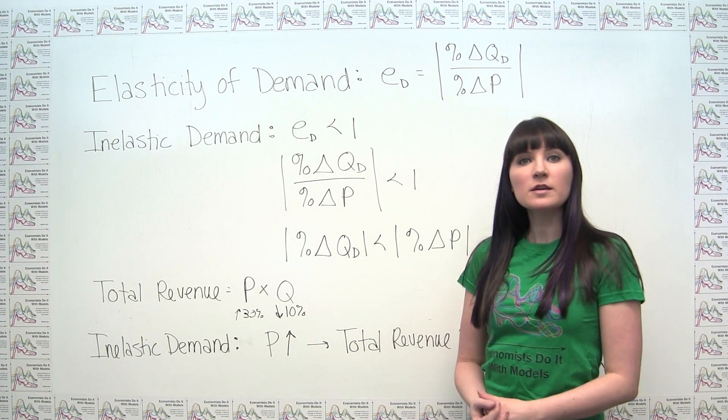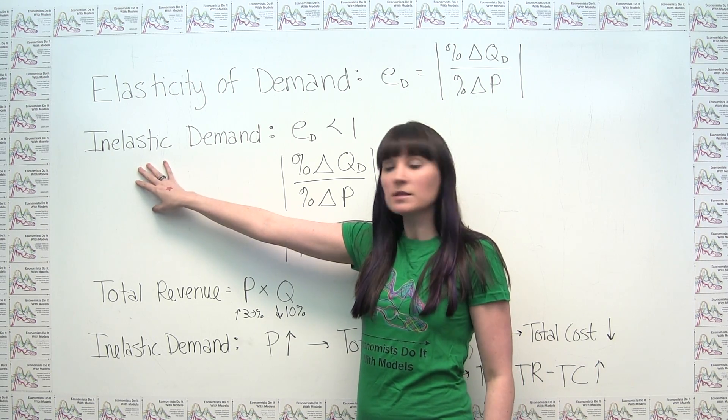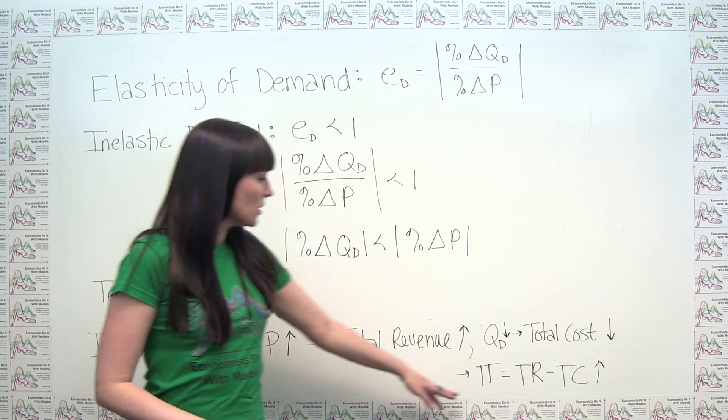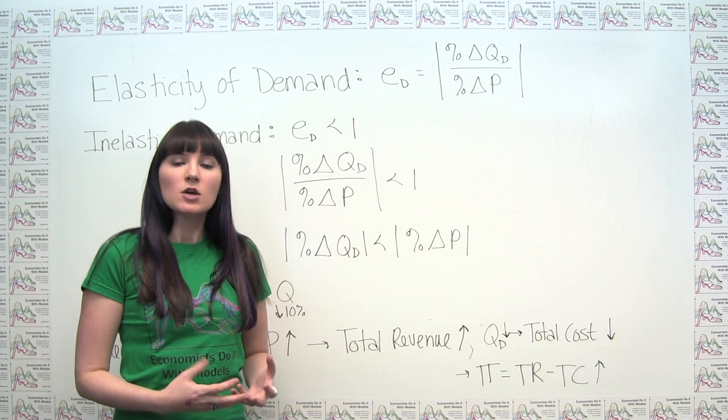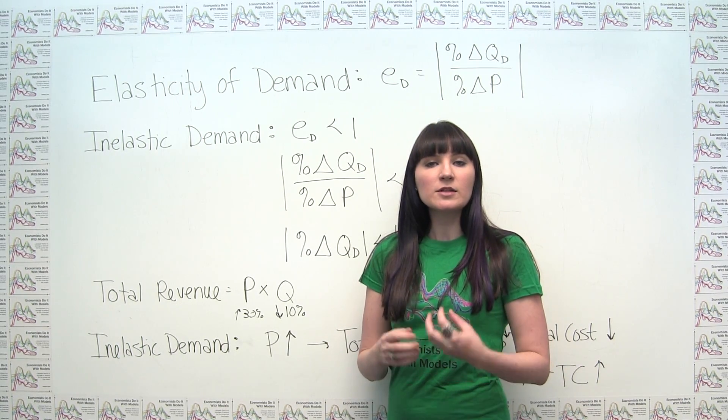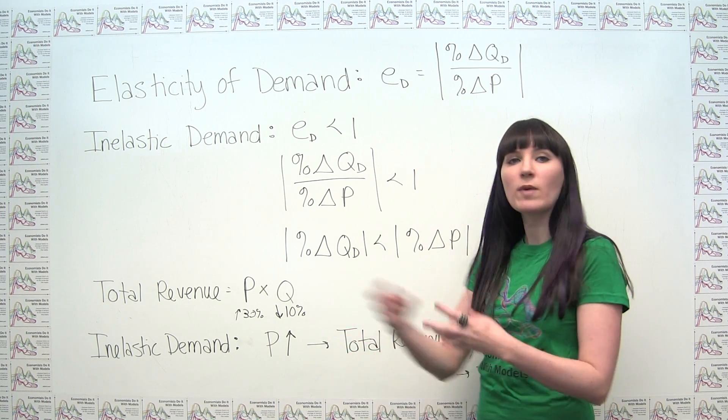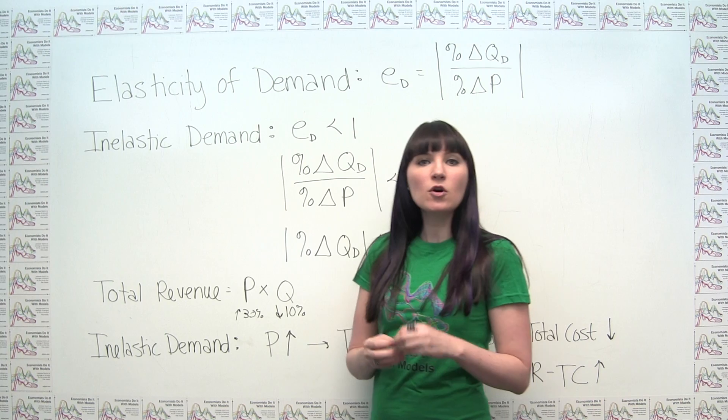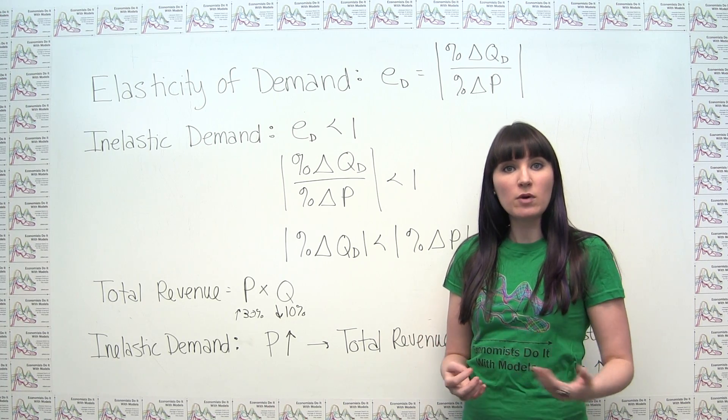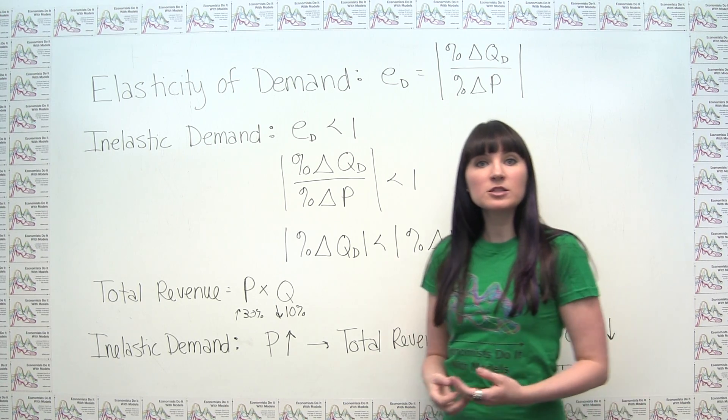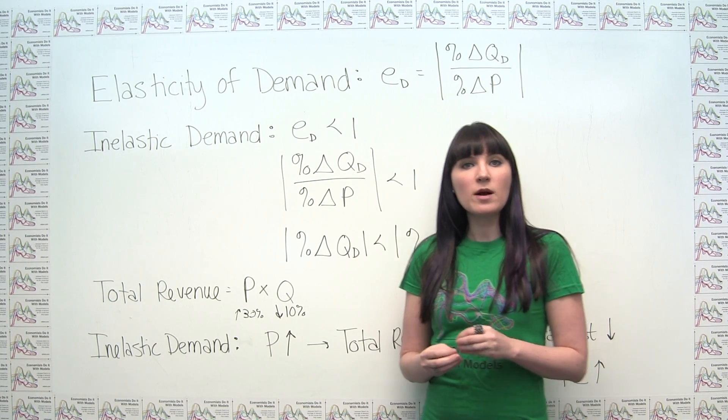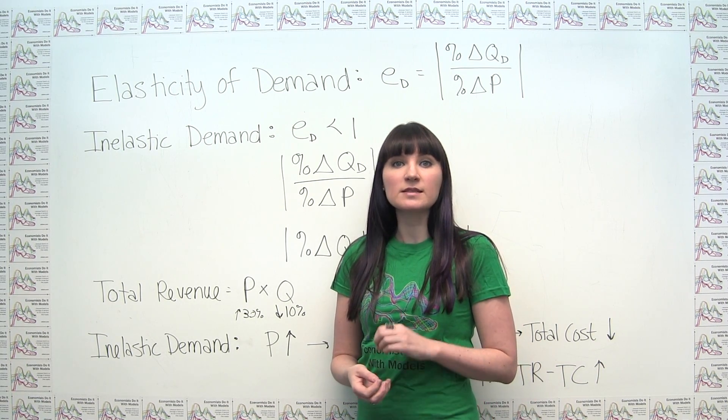So basically what we saw here is that whenever a firm is facing inelastic demand, an increase in price is going to lead to an increase not only in total revenue, but also an increase in profit. So whenever a firm is facing inelastic demand at a particular price quantity pair, there's an incentive for that company to move away from that point. Therefore, it stands to reason that no points where the firm is facing inelastic demand can possibly be optimal or profit maximizing. And therefore, we can reach the conclusion that whenever a firm is maximizing their profit, that they must be at a price quantity pair such that the price elasticity of demand is elastic at that point.